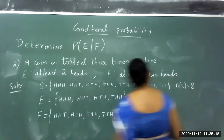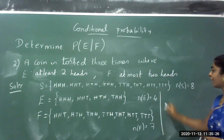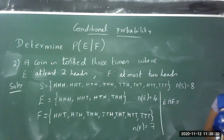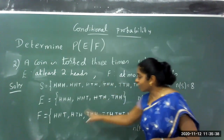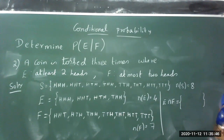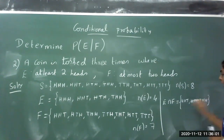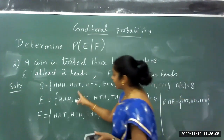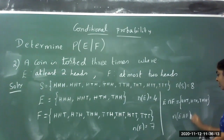Now I need E intersection F — the common elements. Looking at E = {HHH, HHT, HTH, THH} and F = {HHT, HTH, THH, HTT, THT, TTH, TTT}: HHH is not in F, so exclude it. The common elements are HHT, HTH, and THH. So E intersection F = {HHT, HTH, THH} and the number of elements in E intersection F is 3.